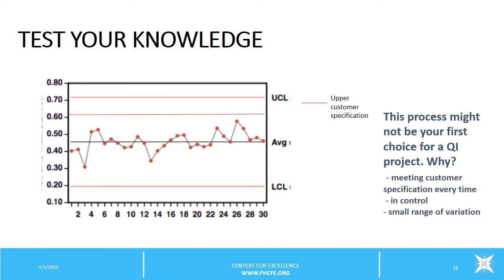It looks to be in control, meaning all the data points are falling within the upper and lower control limits. Plus, the variation around the mean looks to be reasonably tight, meaning most of the data points are close to the mean, indicating a relatively small range of variation in the process.